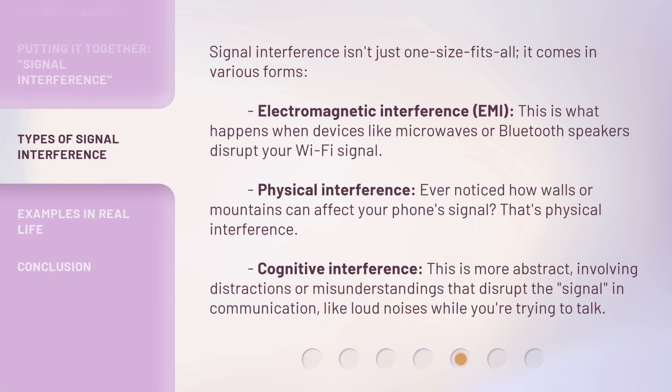Signal interference isn't just one size fits all — it comes in various forms. Electromagnetic interference, or EMI: this is what happens when devices like microwaves or Bluetooth speakers disrupt your Wi-Fi signal. Physical interference: ever noticed how walls or mountains can affect your phone's signal? That's physical interference. Cognitive interference: this is more abstract, involving distractions or misunderstandings that disrupt the signal and communication, like loud noises while you're trying to talk.